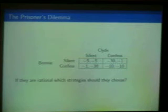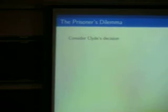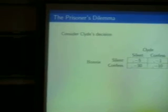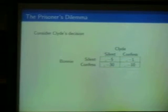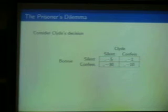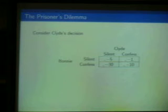What are rational strategies for these two people? Think about Clyde's decision — the person choosing one of the columns. If you are Clyde, you say: I have to choose to remain silent or to confess. I know the payoff I get will depend on what I choose and what Barney has chosen, and that I cannot control. If I knew that Barney was going to remain silent, what would I do? Clearly confess. If Barney were to confess, once again the best thing to do is to confess.